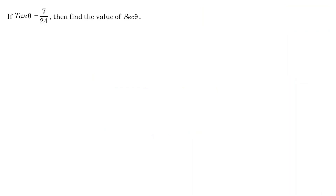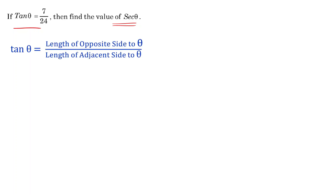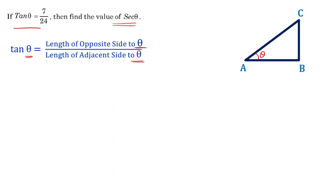If tan theta equals 7 by 24, then find the value of sec theta. Tan theta equals the length of the opposite side to angle theta divided by the length of the adjacent side to angle theta. Let angle A equal theta in a right triangle. The opposite side to theta is BC and the adjacent side is AB, so BC by AB equals 7 by 24.